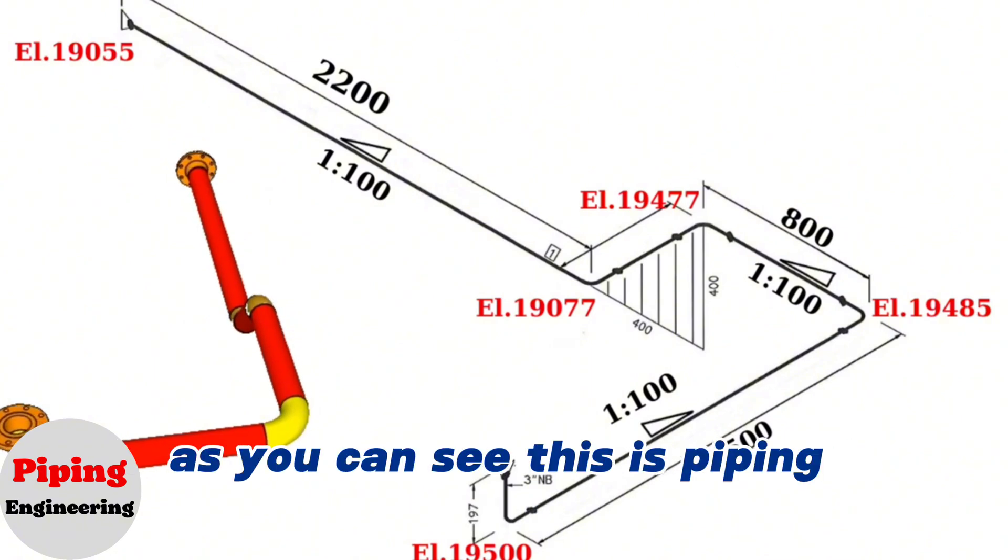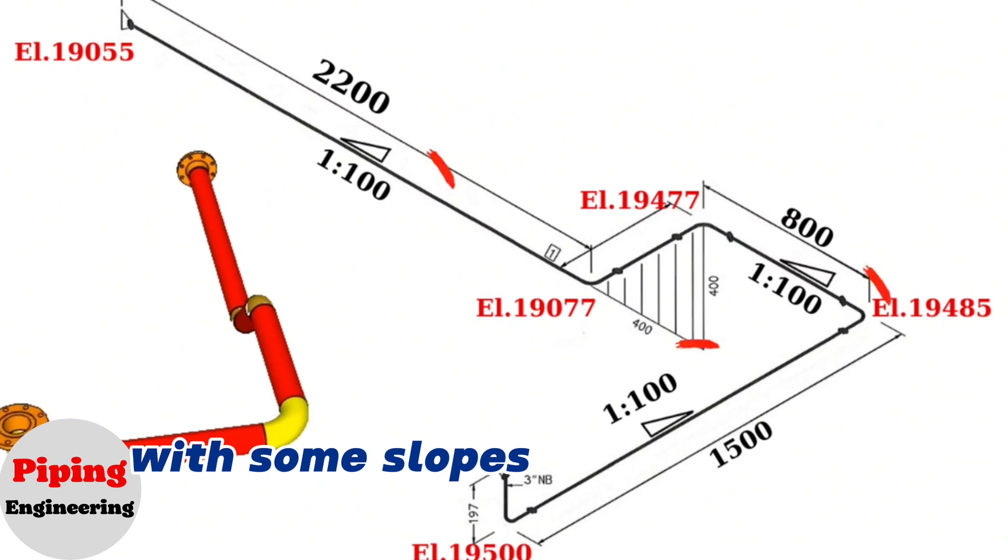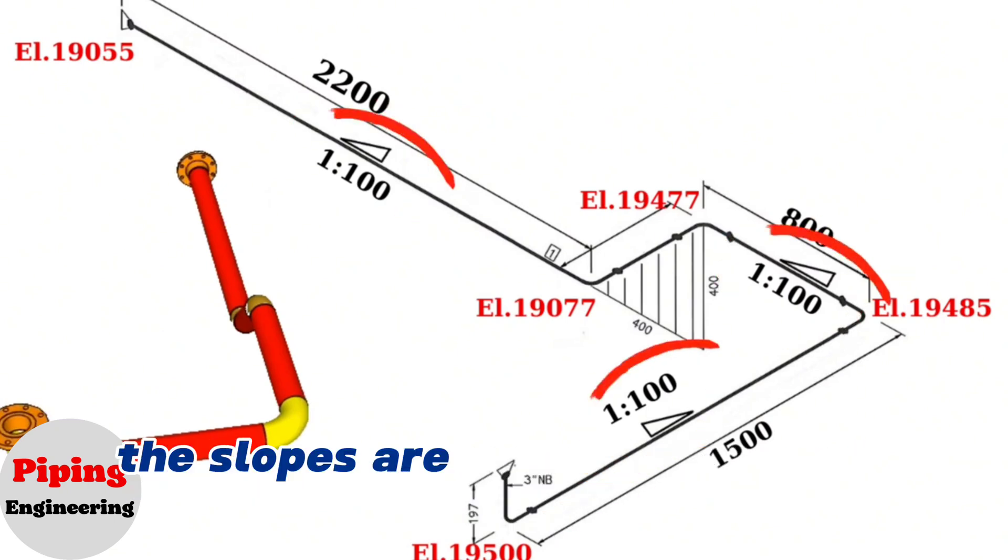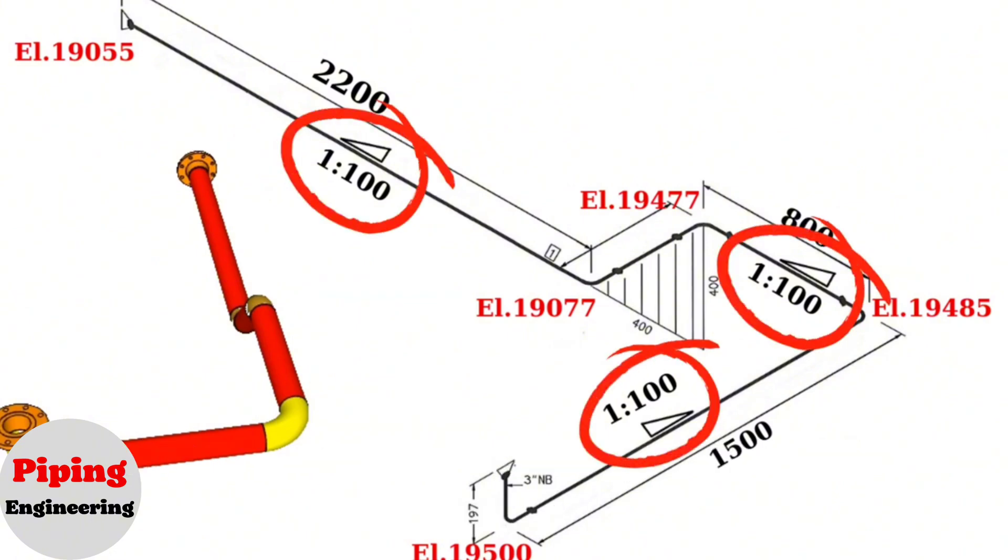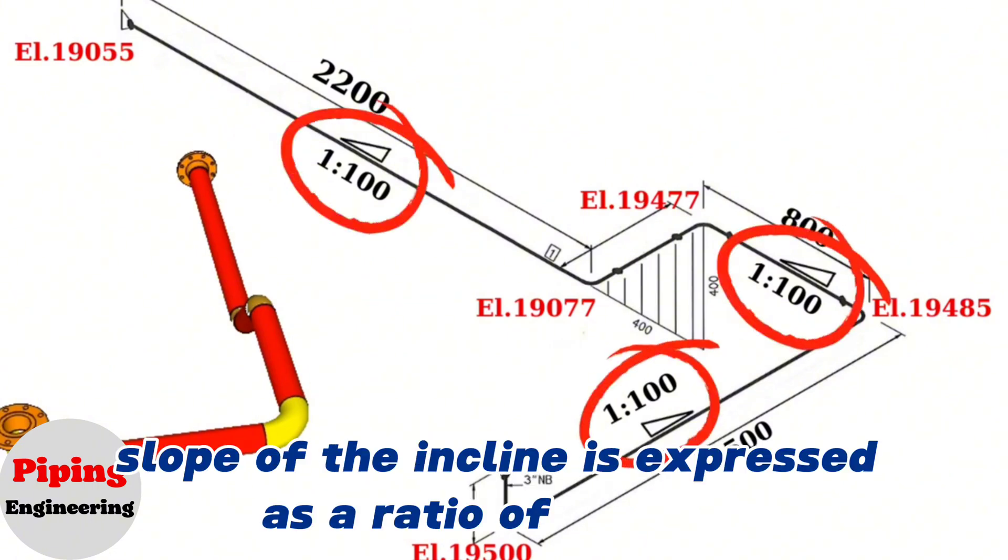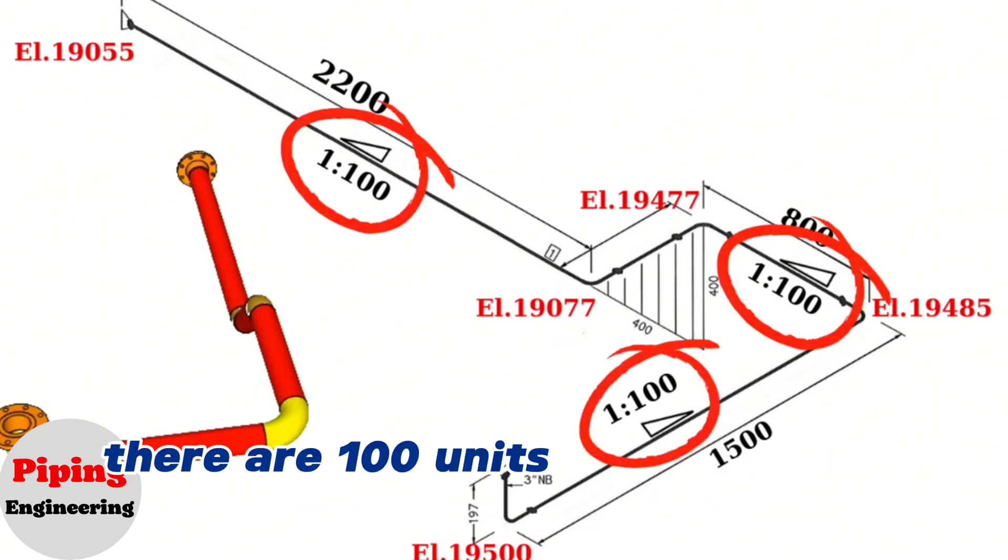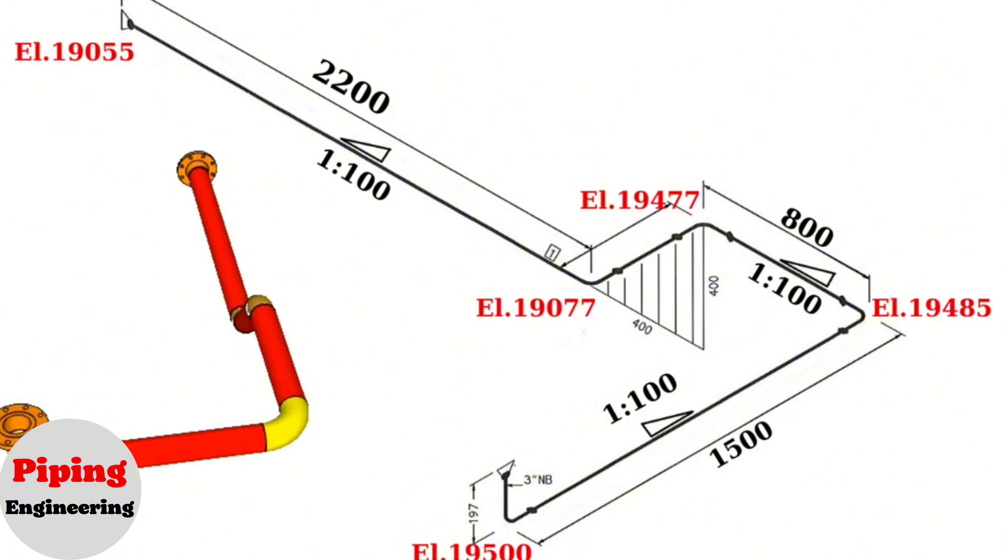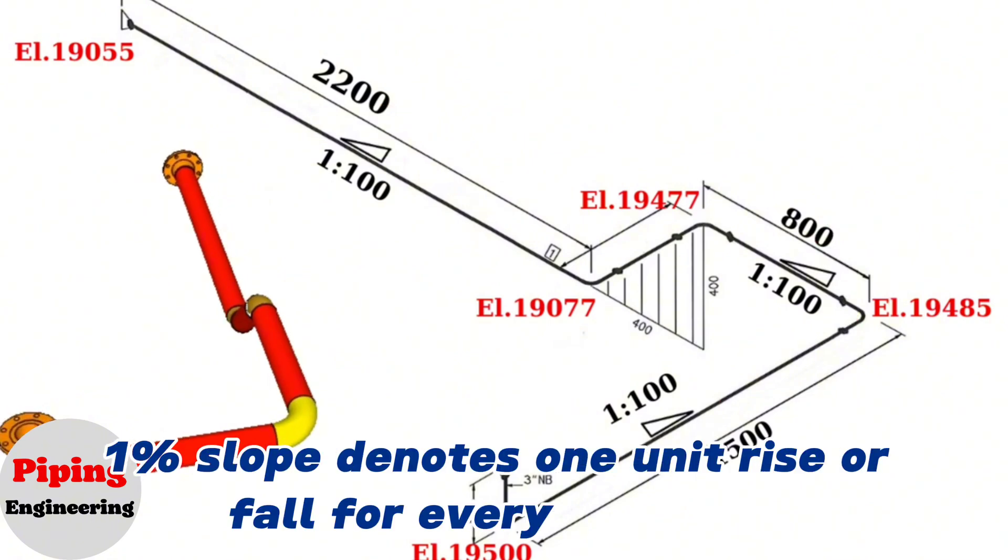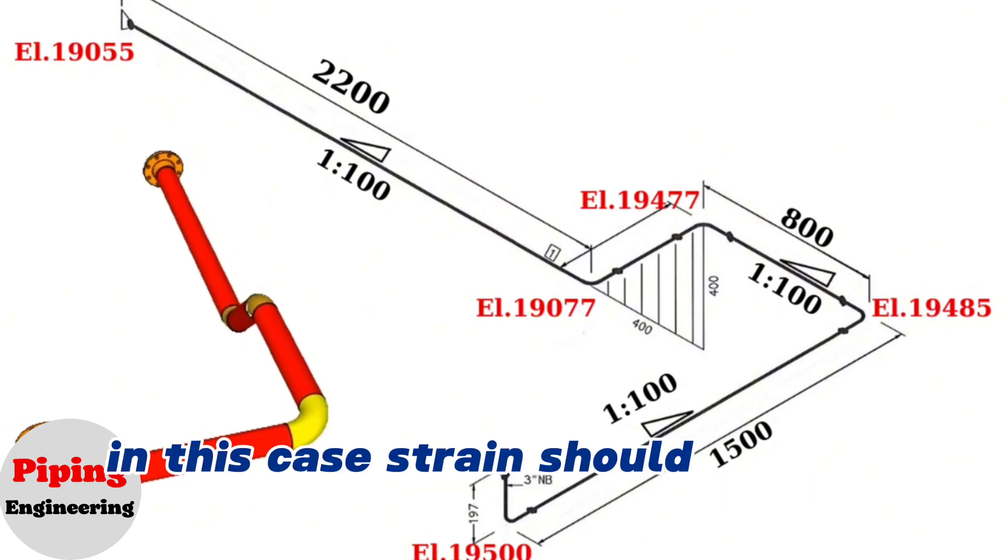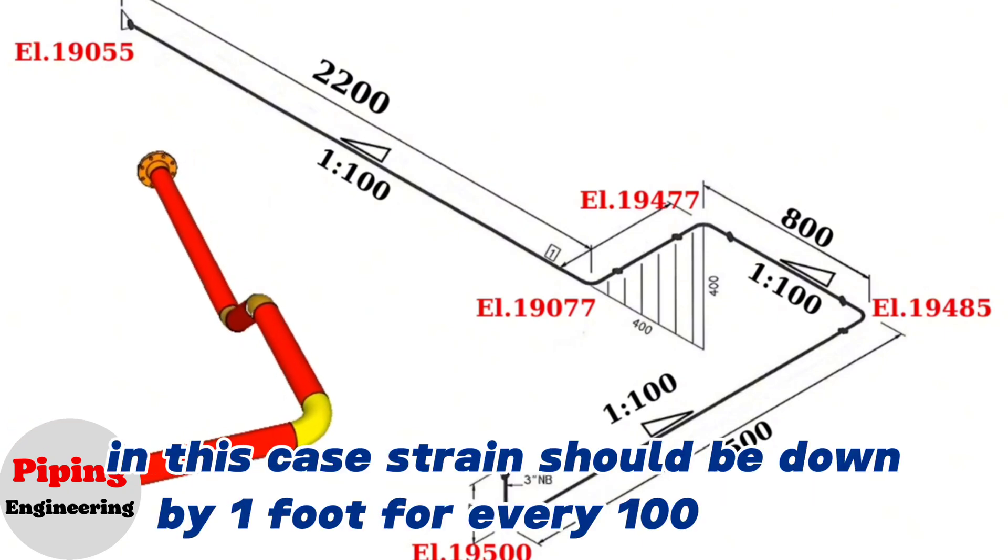As you can see, this is a piping isometric drawing with some slopes and different elevations. In the piping isometric drawings, the slopes are shown with this symbol. In this drawing, slope of the incline is expressed as a ratio of 1 to 100, meaning that for every one unit of vertical elevation there are 100 units for horizontal distance. 1% slope denotes one unit rise or fall for every 100 units horizontal length or distance. In this case, drain should be down by 1 foot for every 100 length.